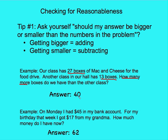This student solved it and said there's a difference of 40. That doesn't make sense. If I have 27, is there any way I could have 40 more than the other class? No way! I know it's going to be less than 27 because they have 13, so they already have some. So I know that this answer does not make sense — it is not reasonable because I was supposed to be getting smaller and instead I got bigger.